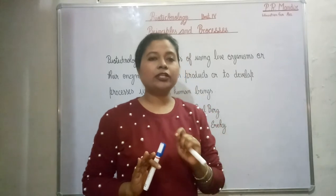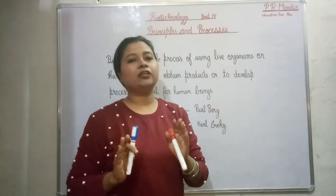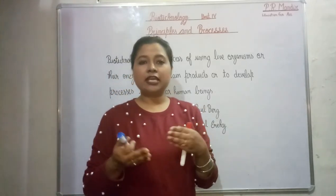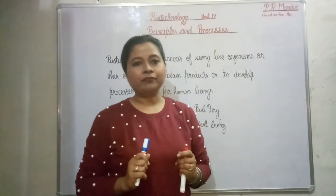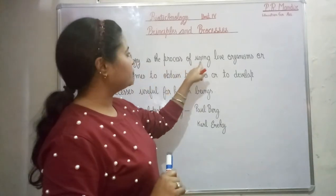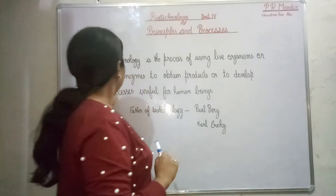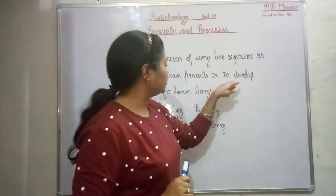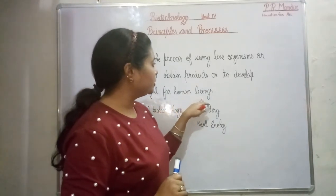So, what is the meaning of biotechnology? Bio means living organisms, and technology — when you are using technology in the case of living organisms, that is known as biotechnology. The definition of biotechnology is: biotechnology is the process of using living organisms or their enzymes to obtain products or to develop processes useful for human beings.